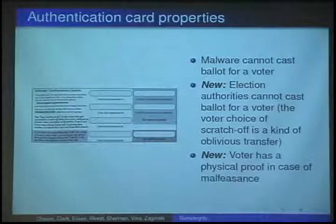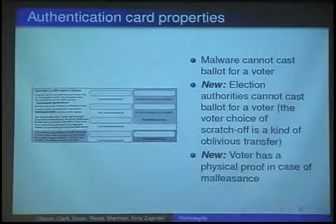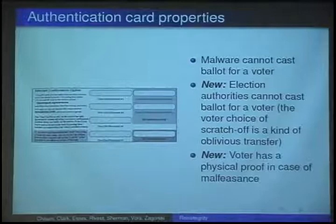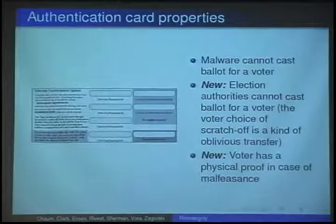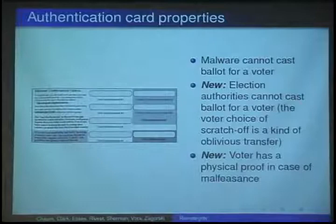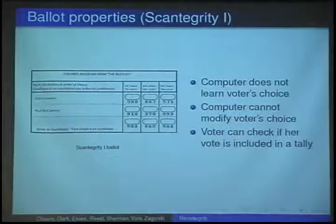The authentication card has several places covered with scratch-offs. Thanks to those numbers, which are hidden initially from the voter, we achieve nice properties. First of all, election authorities cannot cast ballots for voters because they don't know which part of the authentication card will be scratched off. And even if election officials try to do so, the voter has a physical proof of malfeasance. Thanks to the coded ballot, the computer used to cast the ballot does not learn the voter's choice, and it's hard for malware running on the voter's computer to modify the voter's choice.